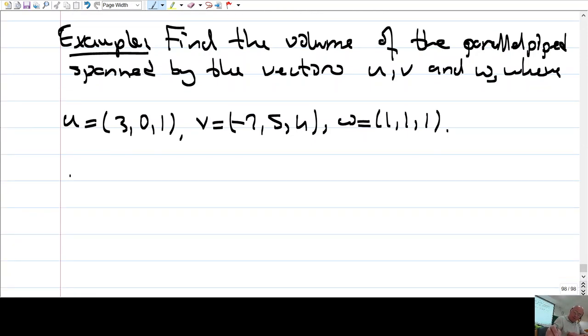Let's say u is the vector (3, 0, 1), v is (-2, 5, 4), and w is (1, 1, 1). So I have u, v, and w, and the parallelepiped is this. It's the volume of this.